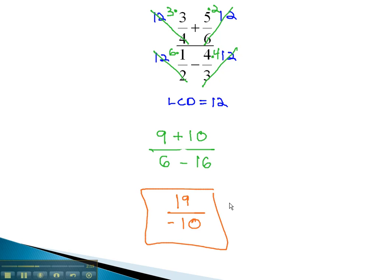This complex fraction reduced to negative 19 tenths. Notice we were not allowed to reduce the 9 over 6. We cannot do any reducing on a fraction if there is any adding or subtracting in the numerator or denominator.